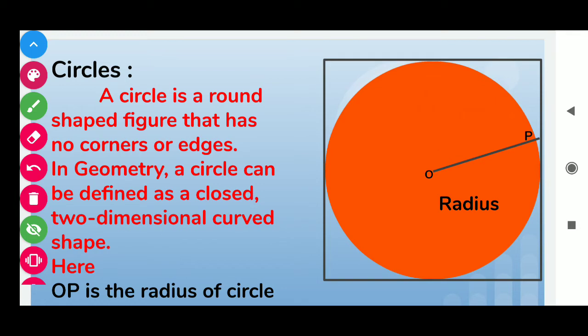Here you can see we have a diagram of a circle. This circle has no corners or edges, and in geometry we can say this as a two-dimensional curved shape.